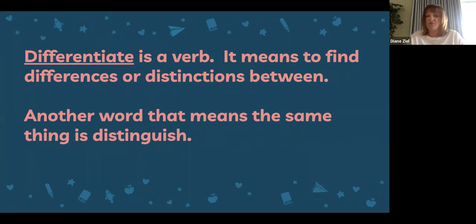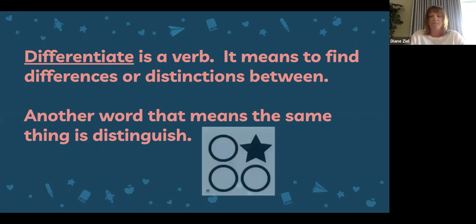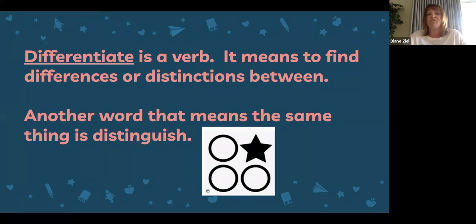Differentiate is also a verb. It means to find the differences or the distinctions between things. Another word that means the same thing is to distinguish — it's a comparison or a contrasting. You look at two different things and find the differences between them. Here you see a picture of four shapes. They all have in common that they're all shapes. However, if we want to differentiate them, we could say there are three circles and one star. The star is different from the circles — it has a different shape and it is also colored in while the circles are left white inside. That's an example of differentiation.